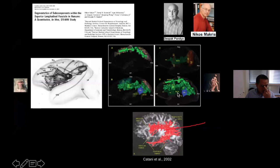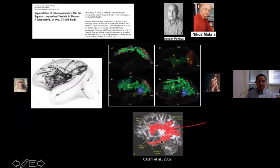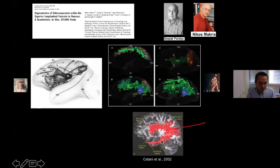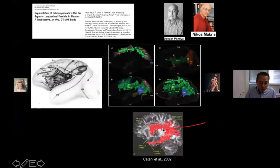Another very important element of this complex — perhaps even the most important — is the arcuate fasciculus. For a long time, the arcuate fasciculus has been referred to as a synonym for the superior longitudinal fasciculus, but when you take a more detailed look, the arcuate should not be used as a synonym for SLF simply because the arcuate is not longitudinal but arcuate, meaning curved. It would be the fourth component of the complex.